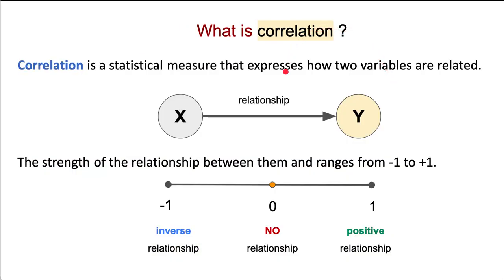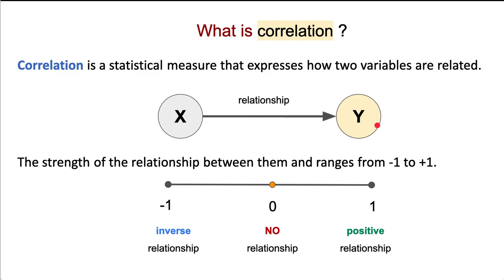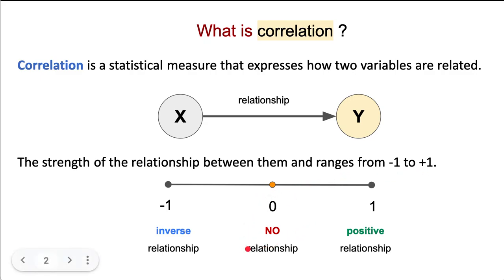First, let's make sure we have an understanding of what correlation is. This is a statistical measure that expresses how two variables are related — for example, x related to y. The strength of the relationship between them ranges from minus one to plus one, where zero is no relationship and minus one and one is where a relationship exists.